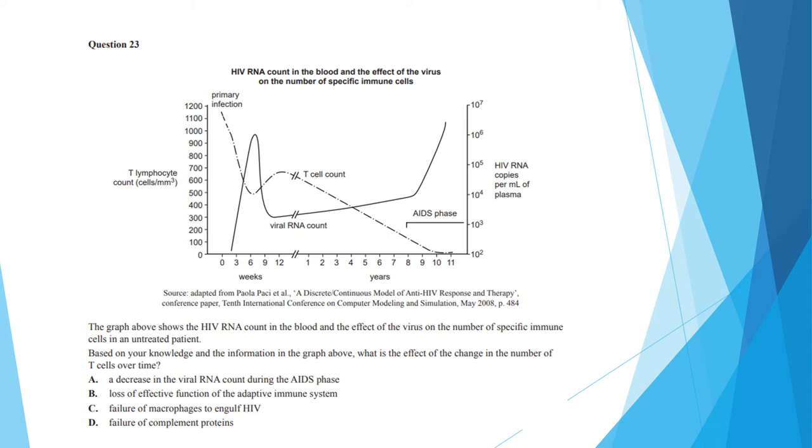Now that we have understood the graph, let's have a look at the question. Based on your knowledge and information in the graph above, what is the effect of the change in the number of T cells over time? And here the answer is B, the adaptive immune system, which T cells are part of, has lost its effective function over time. That's sort of all you can say based on the information provided. Option A is incorrect as during the AIDS phase the viral RNA count is going up. And option C and D, there is nothing in the information in the graph above that you can make those statements with. So it has to be B.